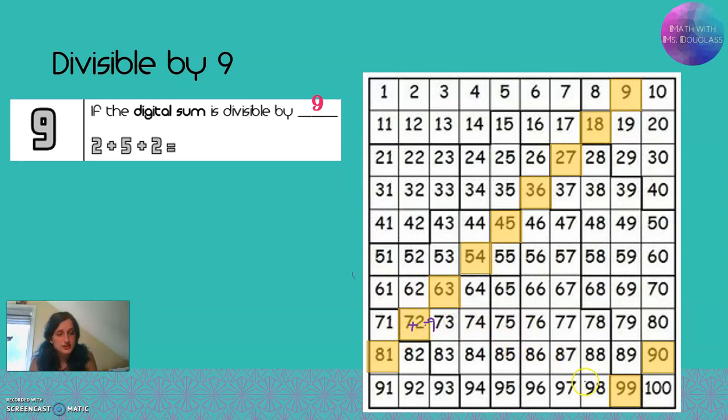Nine plus nine over here, this 99, that's 18. You can either think about 18 and say yes, I know I can divide 18 by nine, or you can then take that 18 and add the one plus the eight and say, oh, that's nine. Yep, I can divide this whole number by nines.